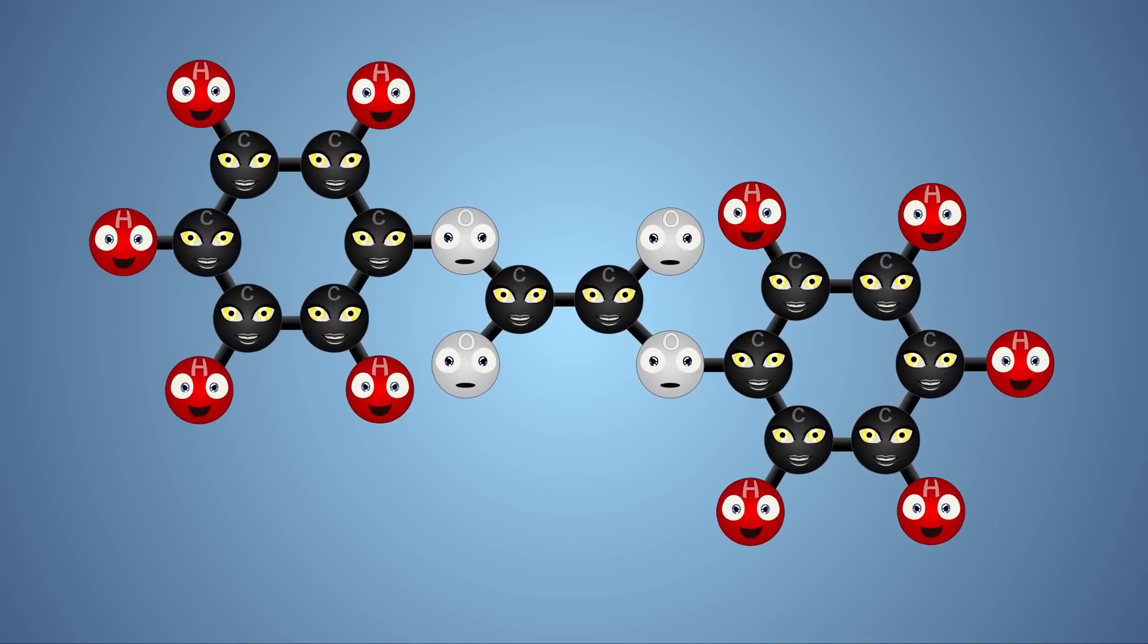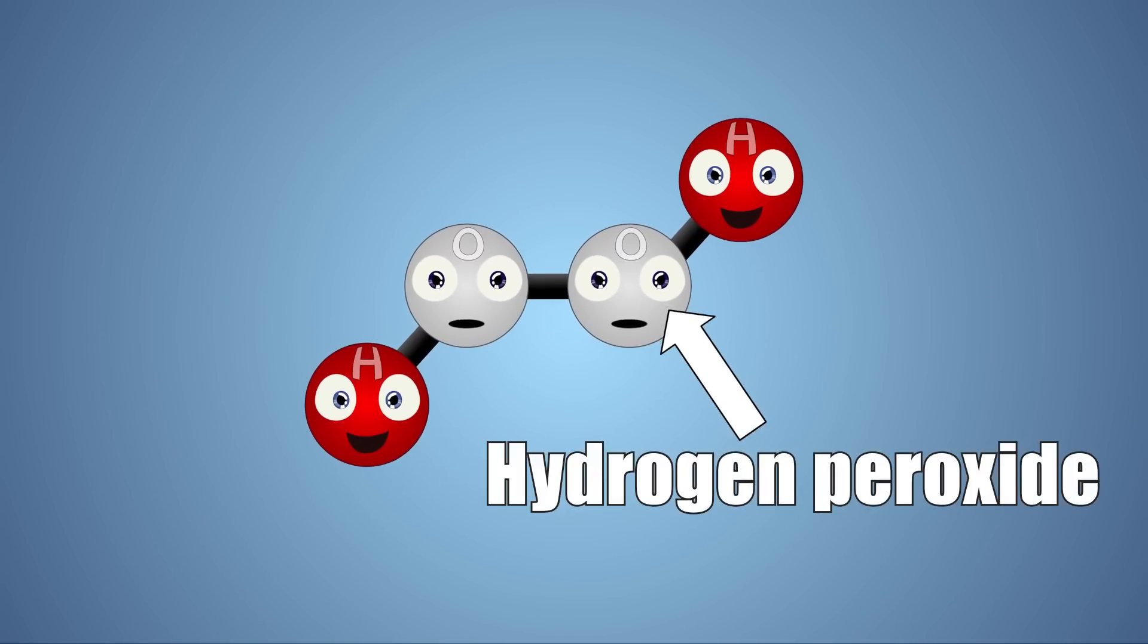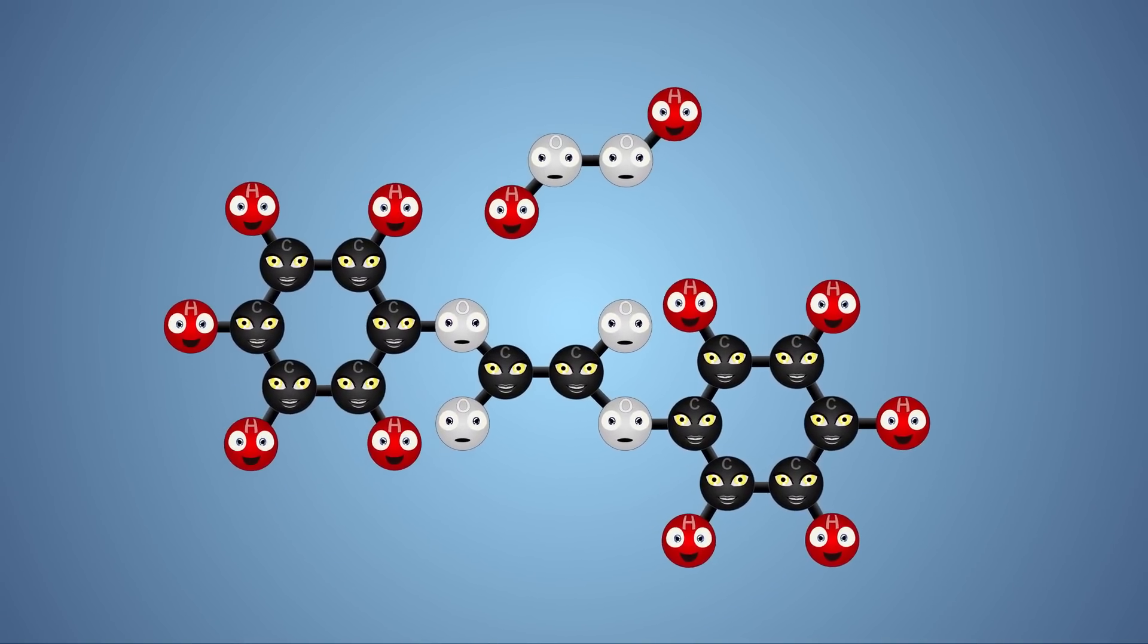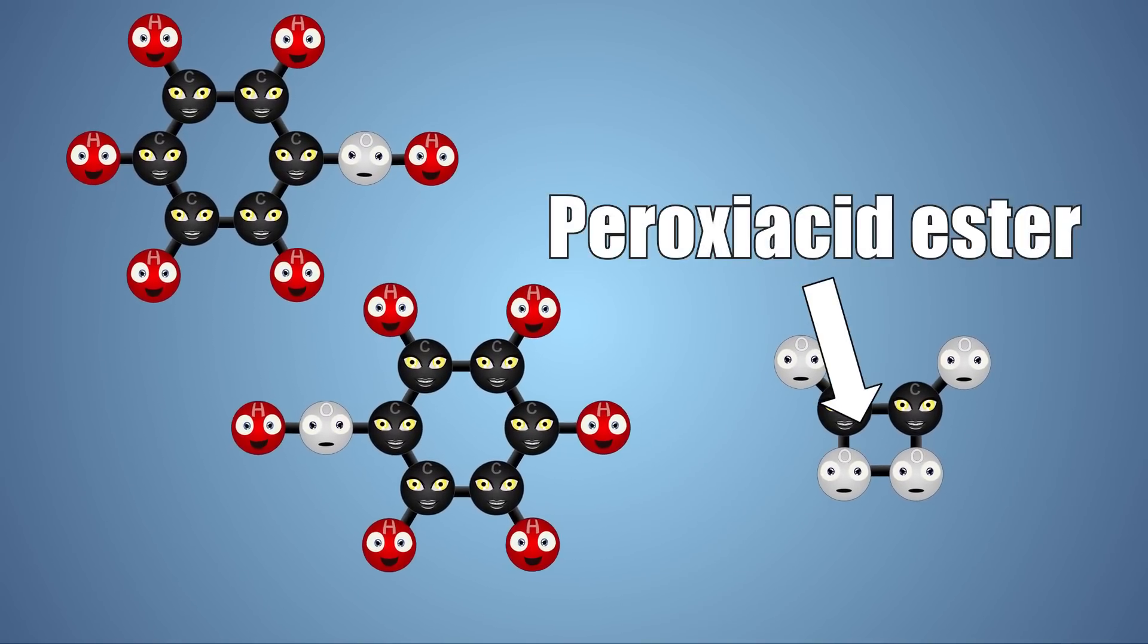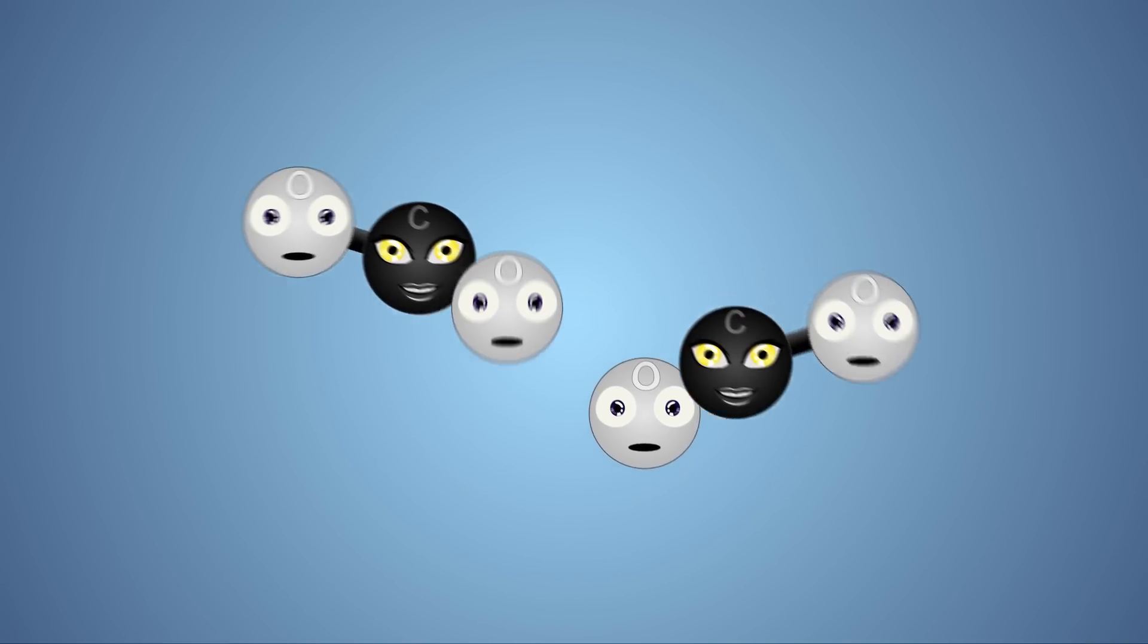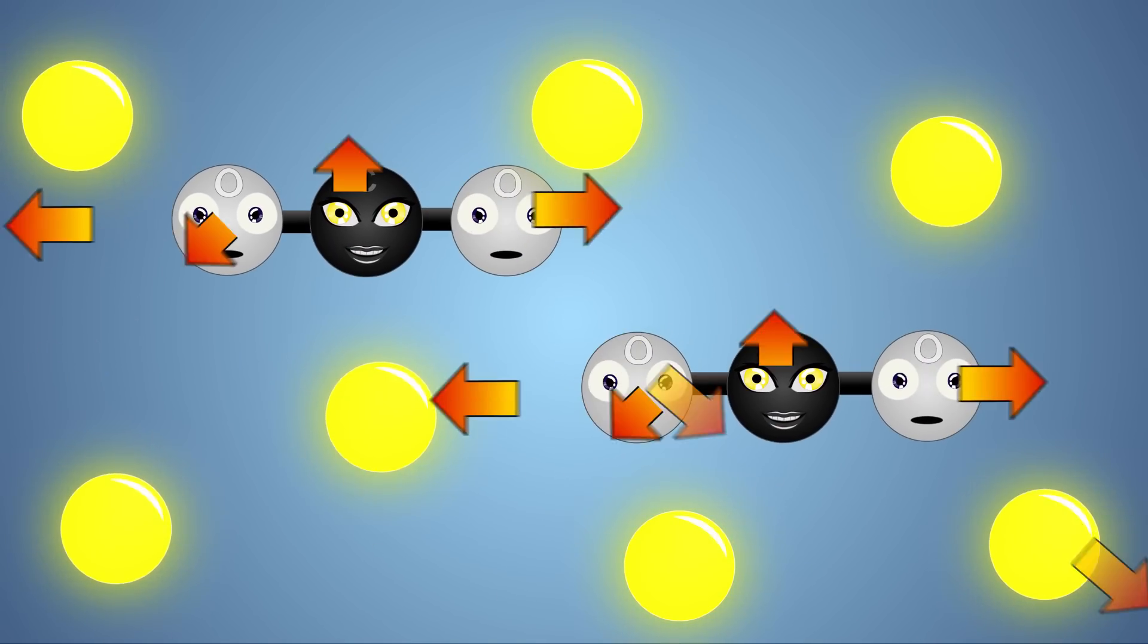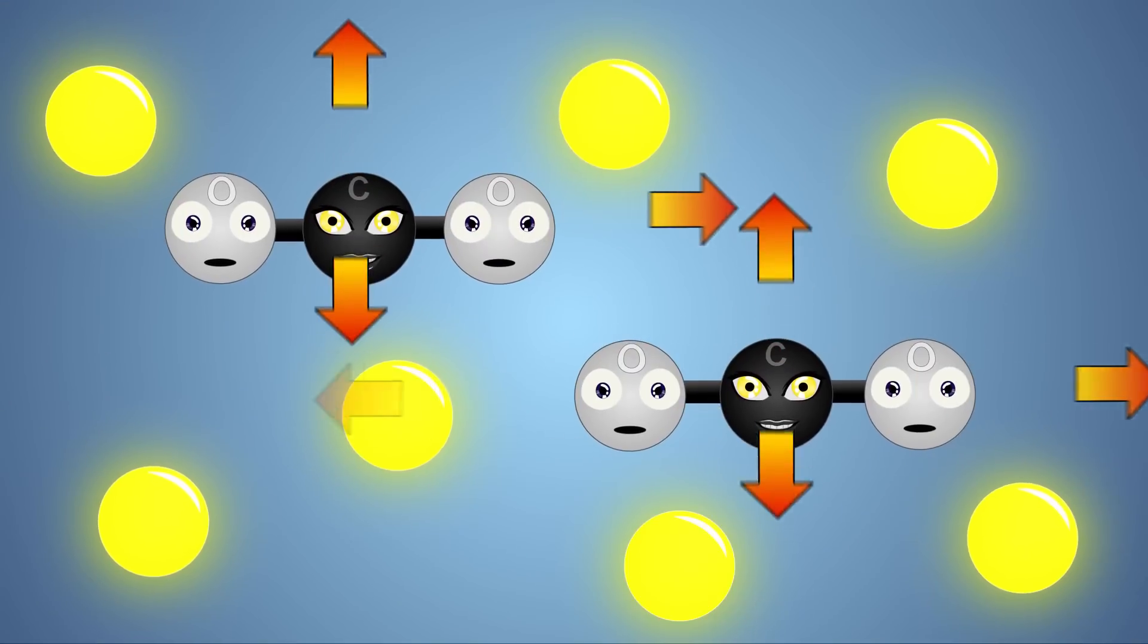In our glow stick, the outer plastic tube contains diphenyl oxalate and the glass vial inside the tube contains hydrogen peroxide. When the glass vial is broken and the two reactants are mixed together, a chemical reaction occurs. This chemical reaction creates two molecules of phenol and a molecule of peroxy acid ester. The peroxy acid spontaneously breaks down into a simpler molecule which is carbon dioxide. This breakdown releases energy that excites the dye within the glow stick, producing light. The color of light produced depends on the dye. This process is known as chemiluminescence.